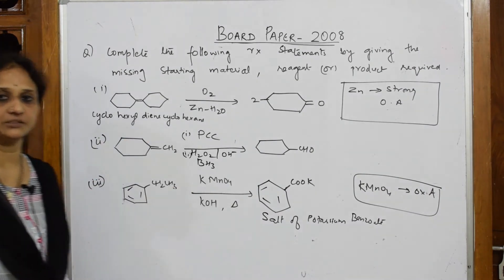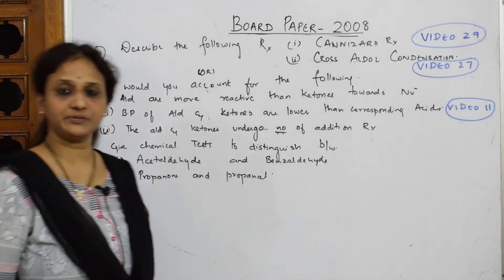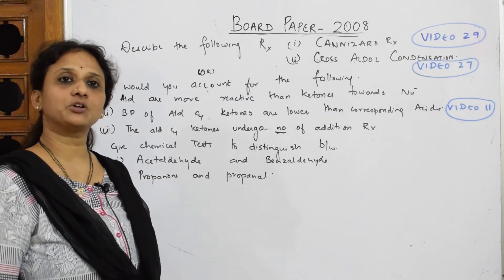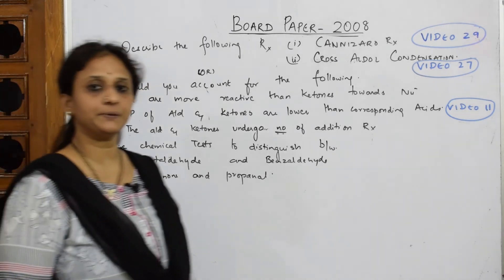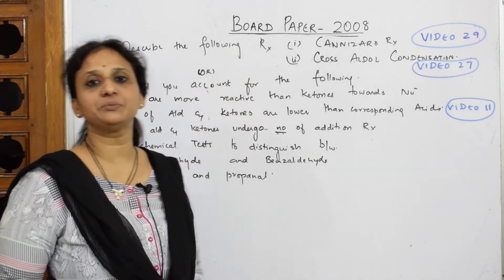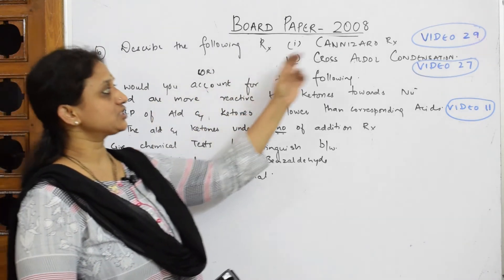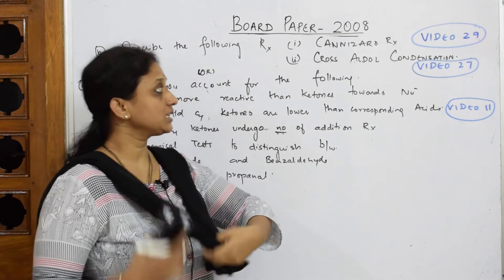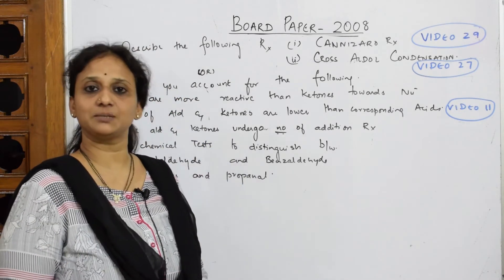Let's come back and see part B of your 2008 paper. We've already done the identification of the reactants, products, as well as reagents. Now this is part B of that particular board paper. They've given us directly the name reactions. Describe the following reactions. Cannizzaro's - I've numbered the video here.